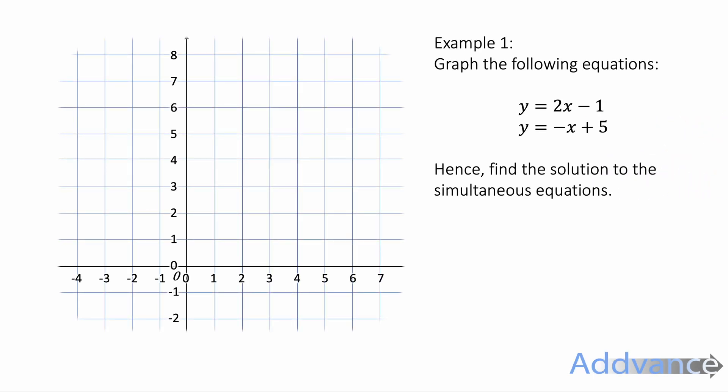In example 1 we're going to graph the following equations: y equals 2x minus 1 and y equals minus x plus 5. Hence find a solution to the simultaneous equations. These are two straight line graphs. Before we continue you must understand your straight line graphs in the form y equals mx plus c. If you're not confident with y equals mx plus c you need to watch my videos on straight line graphs before we continue. I will link them in the description.